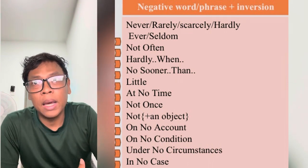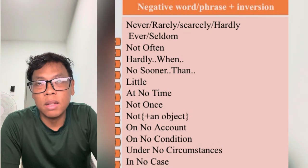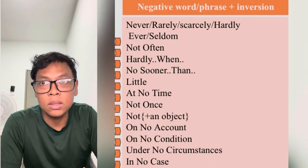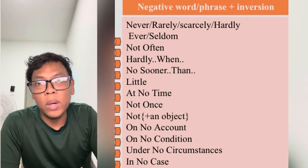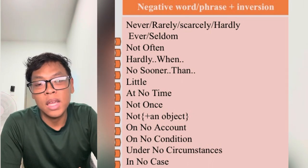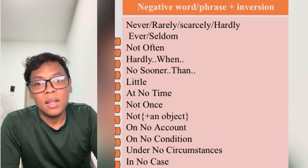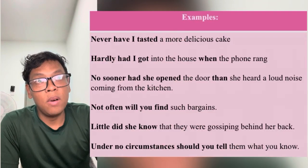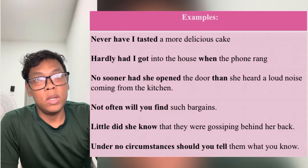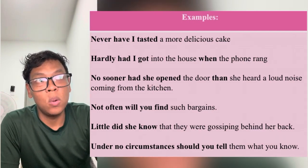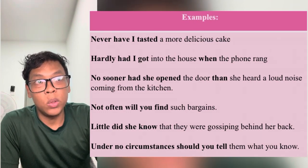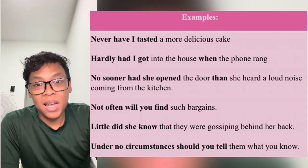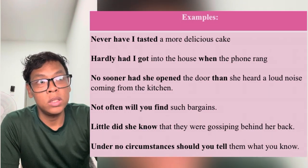For negative words or phrases plus inversion, common words include: never, rarely, scarcely, hardly ever, seldom, not often, hardly when, no sooner than, little, at no time, not once, not plus an object, on no account, on no condition, under no circumstances, and in no case. Examples: 'Never have I tasted a more delicious cake.' 'Hardly had I got into the house when the phone rang.' 'No sooner had she opened the door than she heard a loud noise from the kitchen.' 'Not often will you find such bargains.' 'Little did she know that they were gossiping behind her back.'